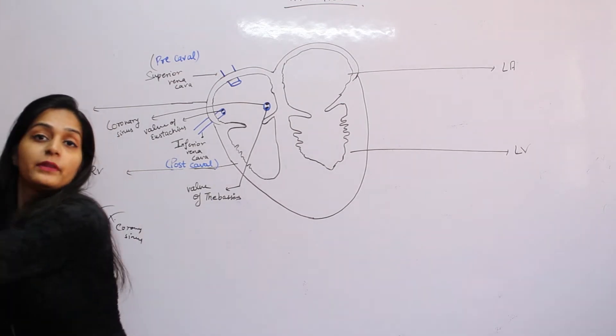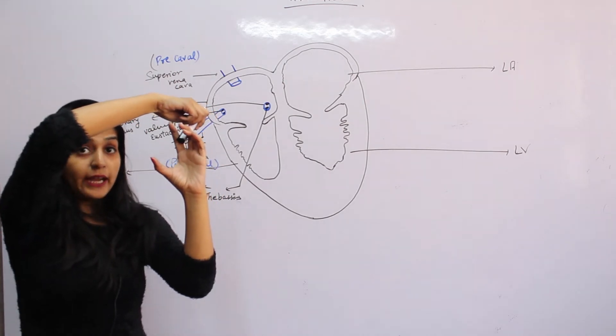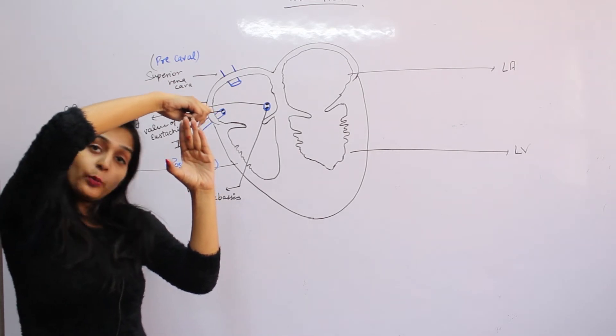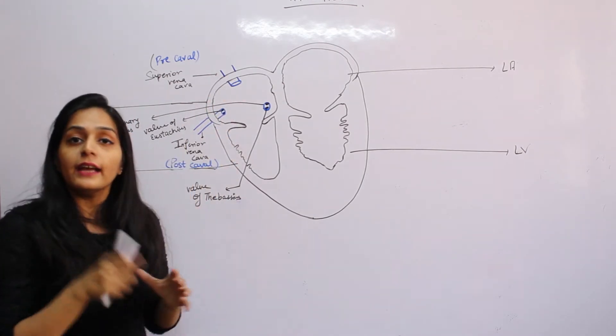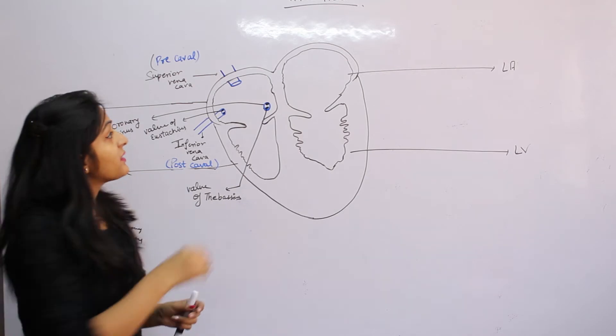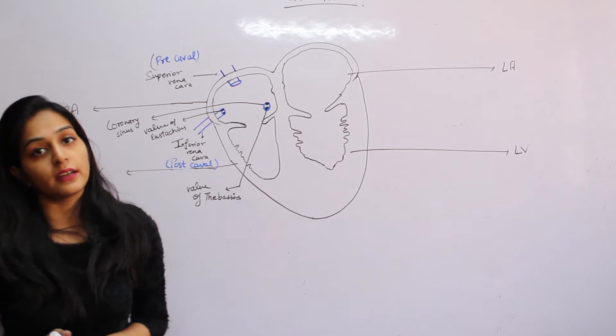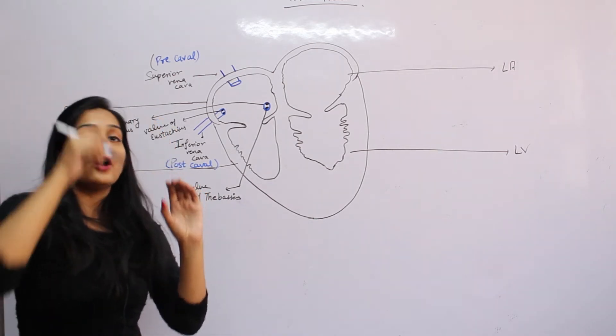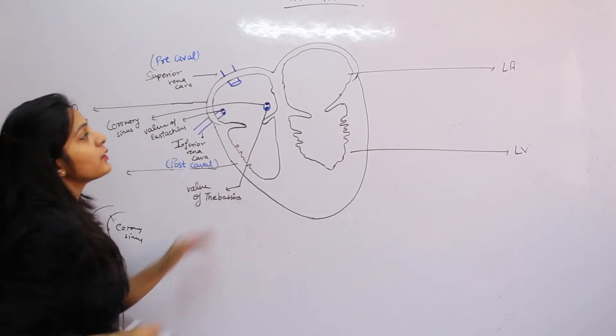When the chamber contracts, the entry point will be closed. When this chamber contracts, the opening will become closed, so blood will not produce backward flow. It enters at an angle, and the contraction closes it. So here, valves are not needed.